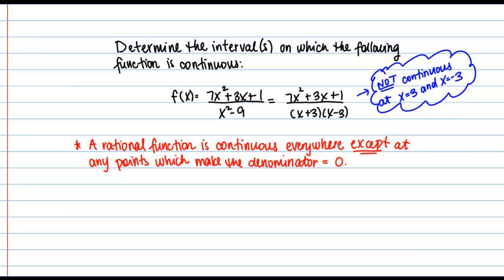Now in some of our other videos on continuity, we've talked about the idea of continuous from the left or left continuous and continuous from the right at endpoints. So we maybe just want to make sure to ask ourselves a question. Could this function f of x be left or right continuous at either x equals 3 or x equals negative 3?